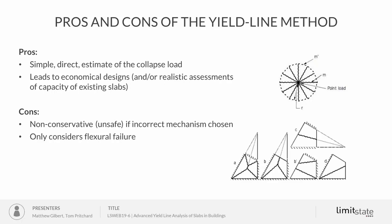The method has strong points and some disadvantages. Strong points: it's a direct estimate of the collapse load, it's relatively simple to carry out by hand, and it leads to economical designs — or, in the context of assessment, more realistic estimates of the true capacity of existing slabs, since traditional elastic methods tend to underestimate slab capacity. The downside is that you need to choose the correct mechanism, otherwise you can overestimate the true collapse load, and it only considers flexural failure.